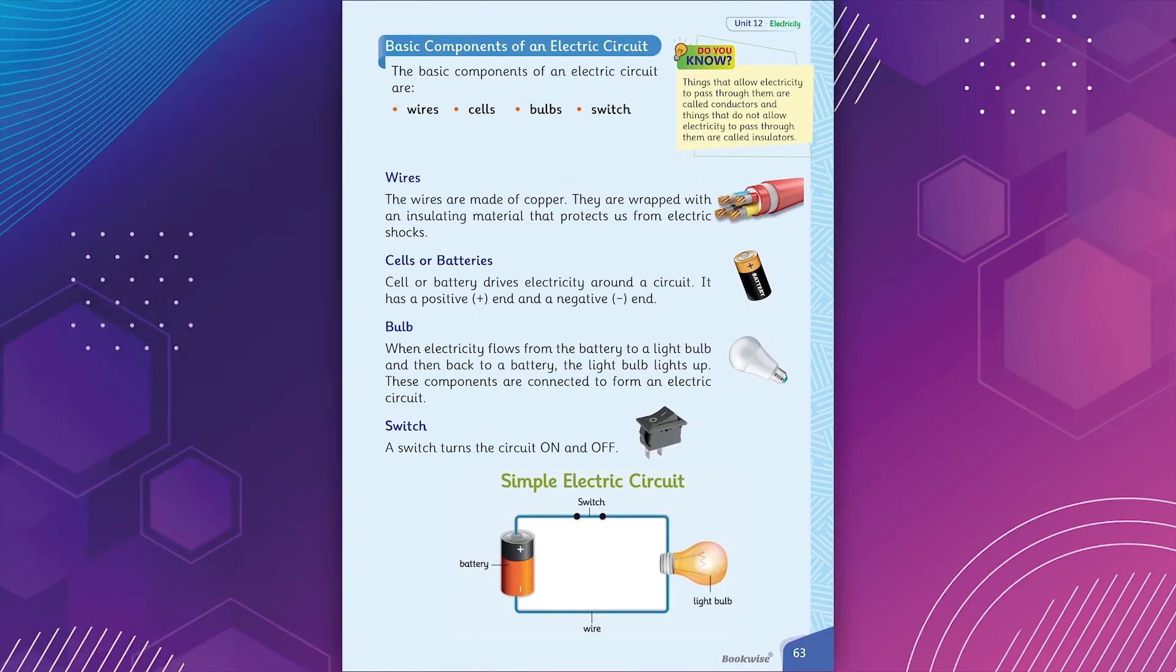Basic Components of an Electric Circuit. The basic components of an electric circuit are wires, cells, bulbs, and a switch.